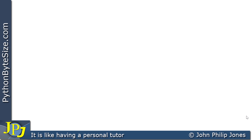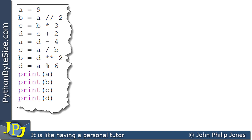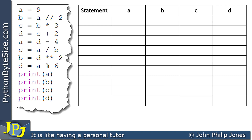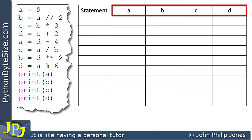At the end of the previous video in this playlist, I left you with a computer program and asked you to produce a trace table for it. What you can see here is the skeleton of the trace table, and if you consider these variables — A, B, C, D — the trace table has to reflect these variables that are used in the computer program, and you can see they appear here.